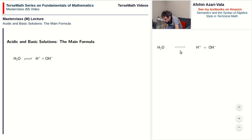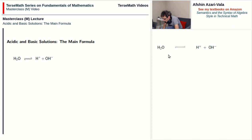Before we talk about what that relationship is, let's talk about notation. I've used equal-sized double arrows. When the size of the two arrows is equal, it means the forward reaction and the backward reaction happen at the same speed. For example, if in one minute a thousand water molecules break down, during that same minute a thousand water molecules are reformed. In the balance, we're not losing or gaining water molecules. Similarly, H-plus and OH-minus concentrations remain stable.